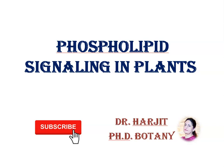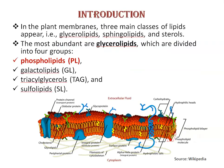Today we will discuss phospholipid signaling in plants. All cells have an outer cell membrane that regulates not only what enters the cells but also how much of any given substance comes in.